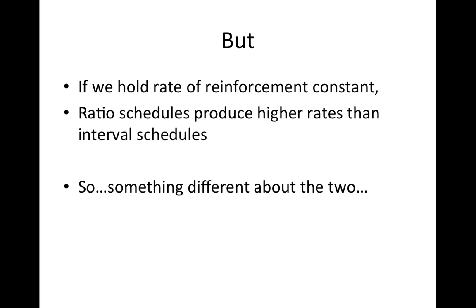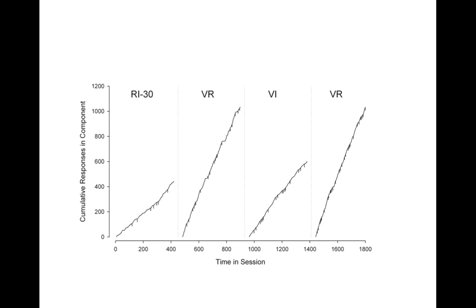An interesting finding is that if we hold rate of reinforcement constant, ratio schedules produce higher rates than interval schedules. Here is an example from an experiment I conducted in my lab, comparing variable interval — specifically random interval or variable interval schedules. We arranged reinforcement on a VI-30 schedule, then yoked a ratio schedule to that interval schedule, meaning reinforcers occurred at the same point on the x-axis for the yoked VR schedule, though the interval schedule was time-dependent while the ratio was response-dependent.